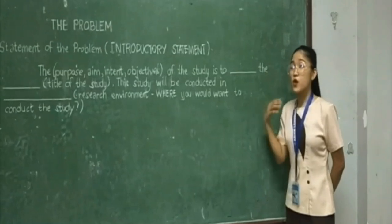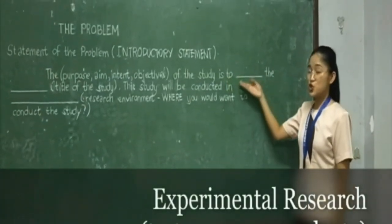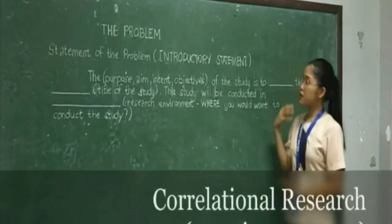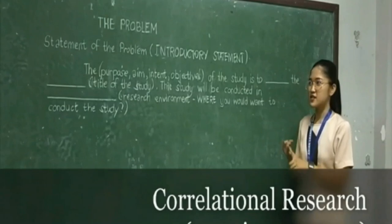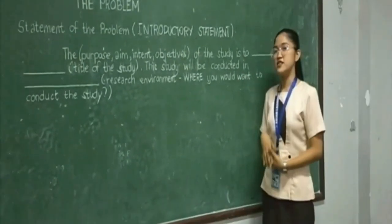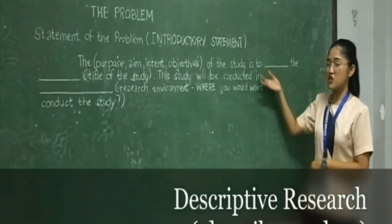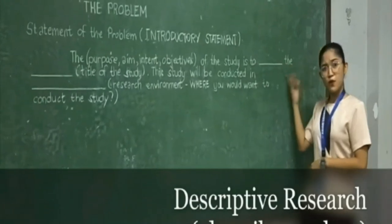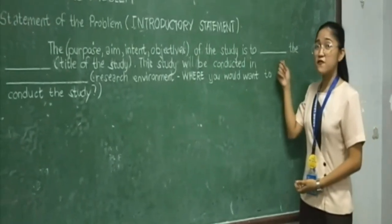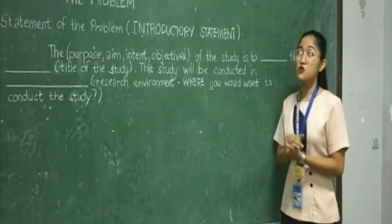For example, if the type of quantitative research is experimental research, we will use the verbs: test, compare, or evaluate. For correlational research, the verbs are: examine and assess — for example, 'the purpose of the study is to examine the blank.' For descriptive research, the verbs are: explore and describe — for example, 'the purpose of the study is to describe the blank.' Make sure the verbs you use fit your study, depending on the type of quantitative research you are going to conduct.